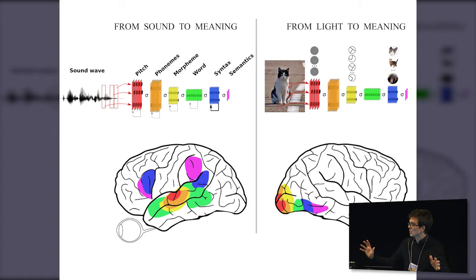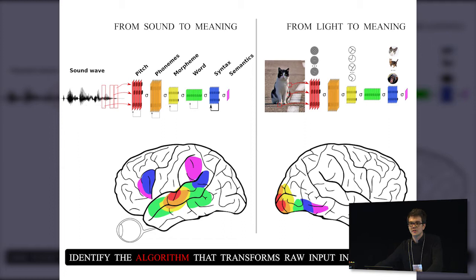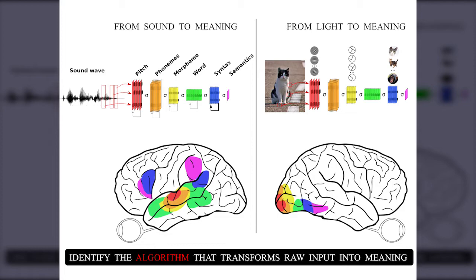The common goal is to identify the algorithm — this sequence of operations that transforms raw data into meaningful representations. But we are dealing with specific challenges in language that we do not face in other fields of cognitive neuroscience. One of the challenges, which has been raised by Angela, relates to the structure of language.